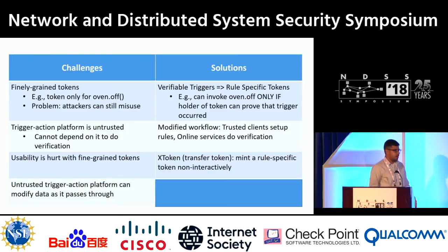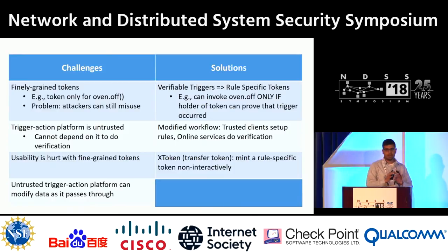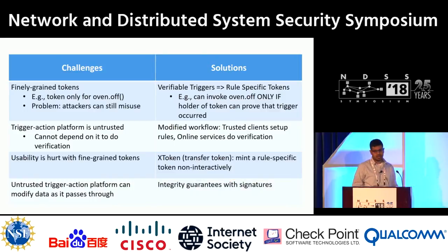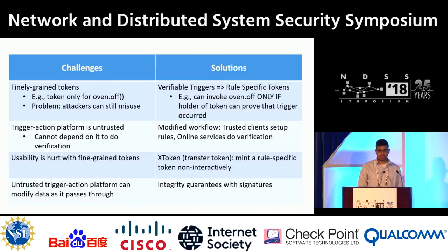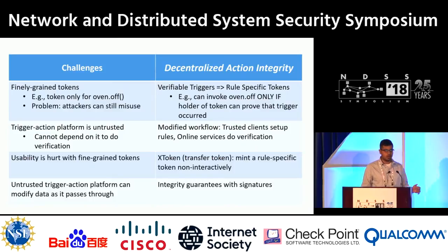Finally, even if all the other conditions hold, the attacker in the trigger action platform can still modify data as it passes through the system. What we want are integrity guarantees, and we achieve this using a signature scheme. Putting these four properties together yields a principle we call decentralized action integrity — that is the main message of this paper. You can architect trigger action platforms to enforce this principle and obtain strong integrity guarantees.